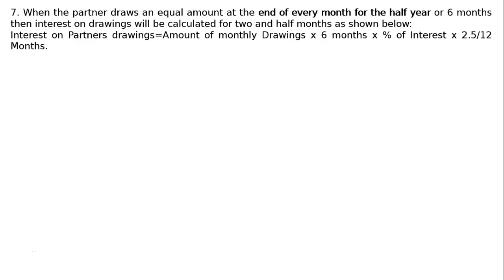The seventh rule: when the partner draws an equal amount at the end of every month for 6 months, then interest on drawings will be calculated for 2 and half months. Interest on partner's drawings equals amount of monthly drawings multiplied by 6 months multiplied by percentage of interest multiplied by 2.5 upon 12 months.